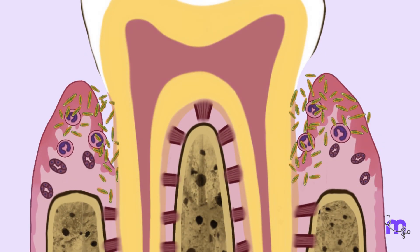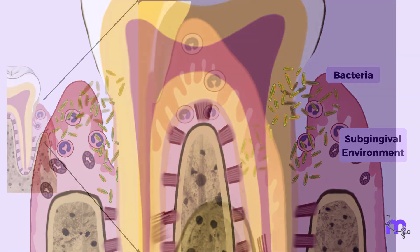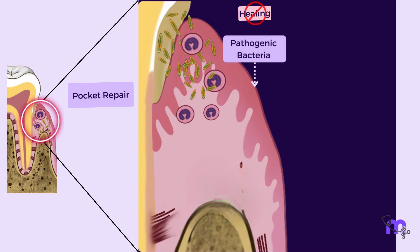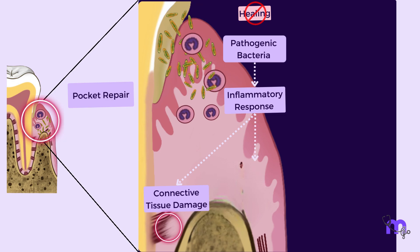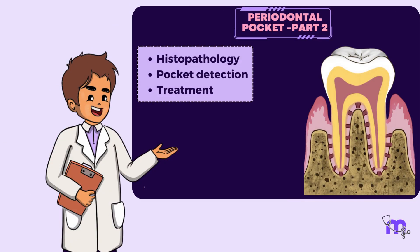Once the pocket is formed, the bacteria exploit this subgingival anaerobic environment to further multiply and increase the disease process. Though our body tries to attempt pocket repair, complete healing does not take place. This is due to constant bacterial attack that stimulates inflammatory response and destroys newly formed tissue elements in the repair process. We will continue with histopathology, pocket detection, and treatment in our next video. Hope you had fun learning with us.